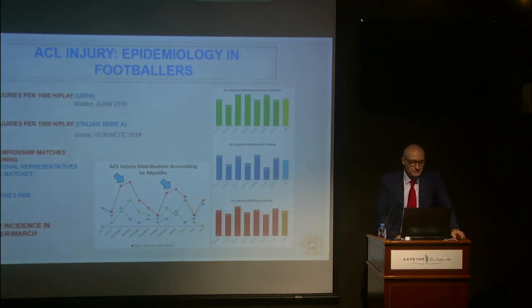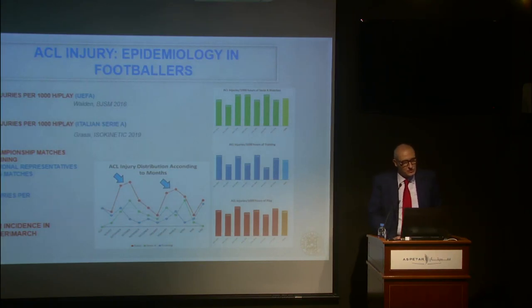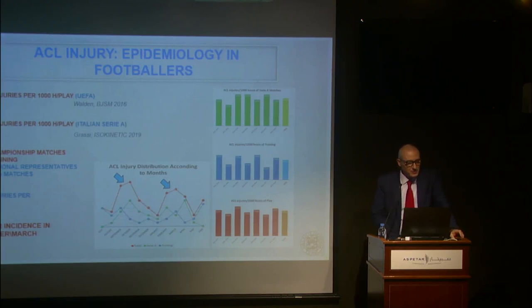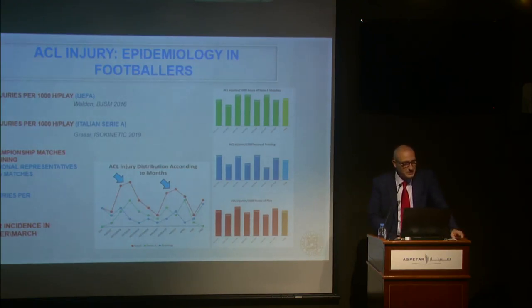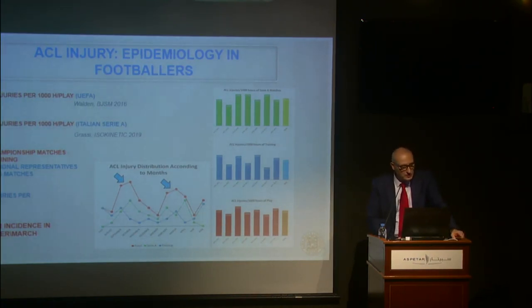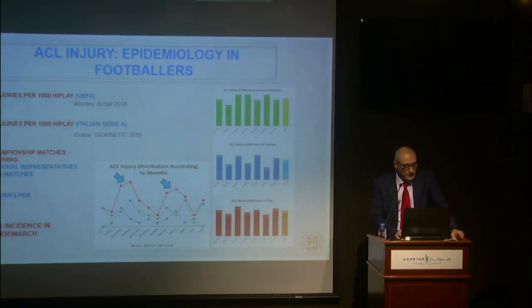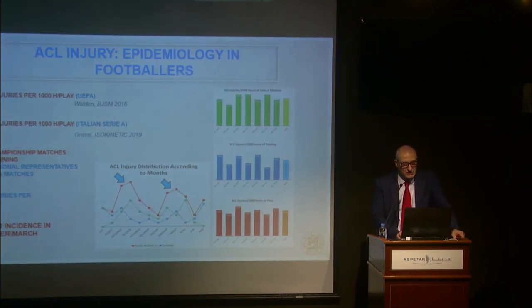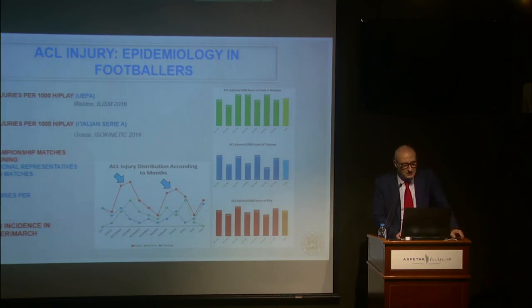Regarding ACL injury epidemiology in footballers, there is 0.059 injury per play. The injury rate for Italian Serie A is a little bit more — about 44 match injuries in championship matches and 40% occurring in training. Normally you have about 12 injuries per season, with higher injury rates in October and March.